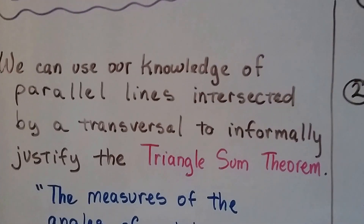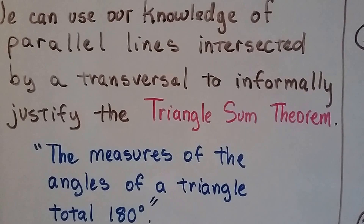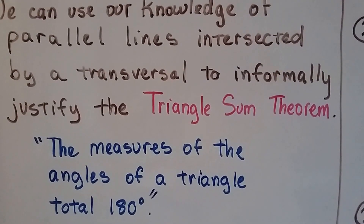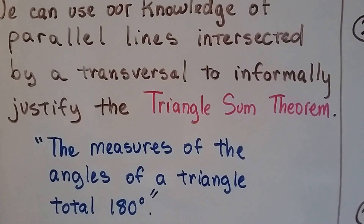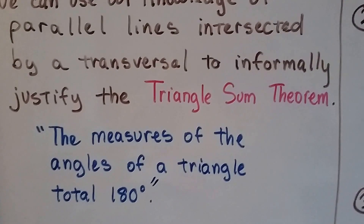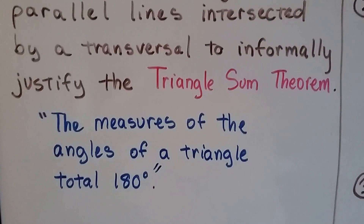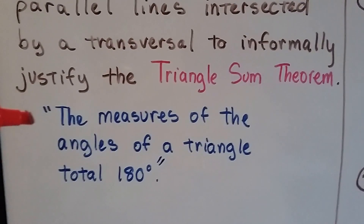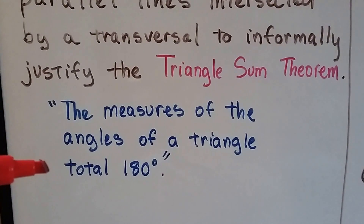We can use our knowledge of parallel lines intersected by a transversal to informally justify the triangle sum theorem. Informally means not formal. The theorem says the measures of the angles of a triangle total 180 degrees.